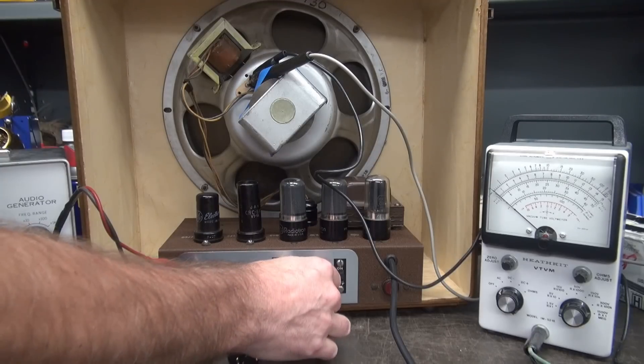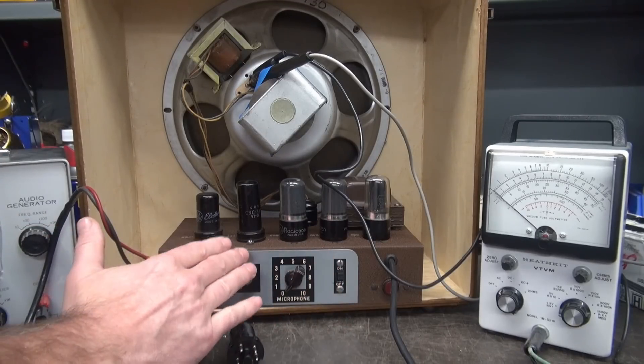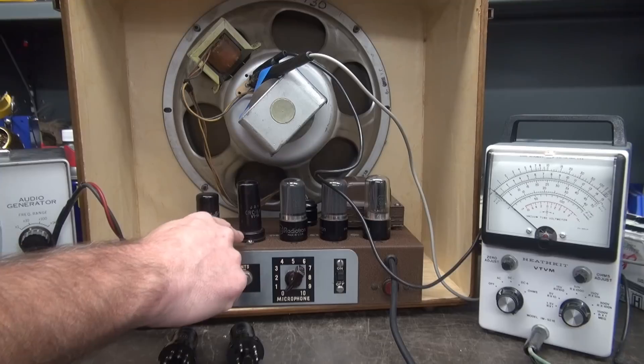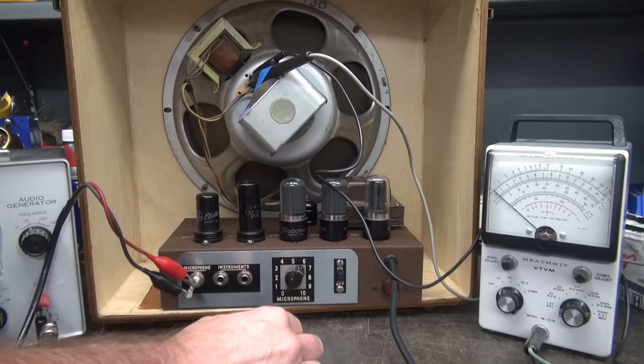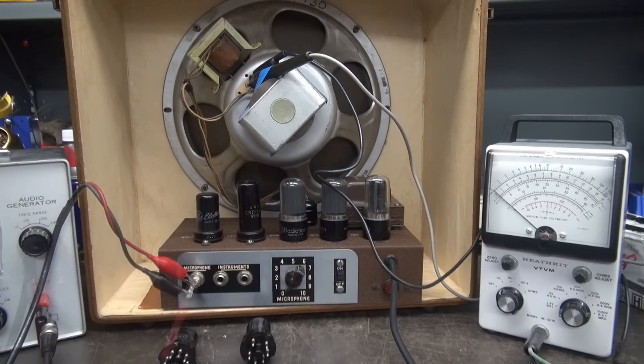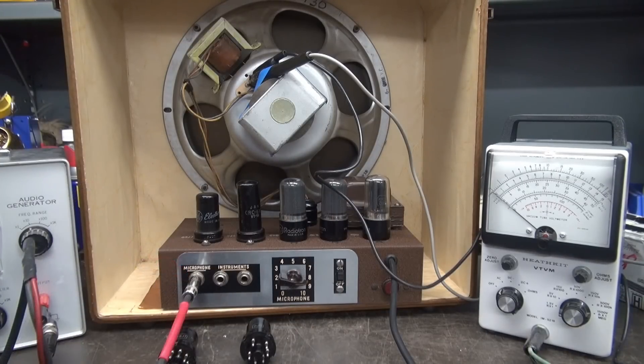So let's test with the guitar the 6N7 and the 6J5 and see which one is more pleasing to the ear. So you guys know I don't play. All right. But what I'm just going to do is strum the guitar. Currently we have the 6N7 installed. Then we'll go back to the 6J5. So here is the 6N7.